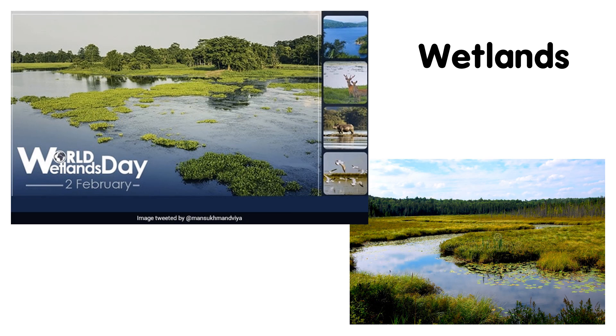Wetlands also filter and clean the water that we use. They prevent flooding by absorbing water. Some mangrove swamps along the coasts help to reduce the impact of tsunamis and storms.